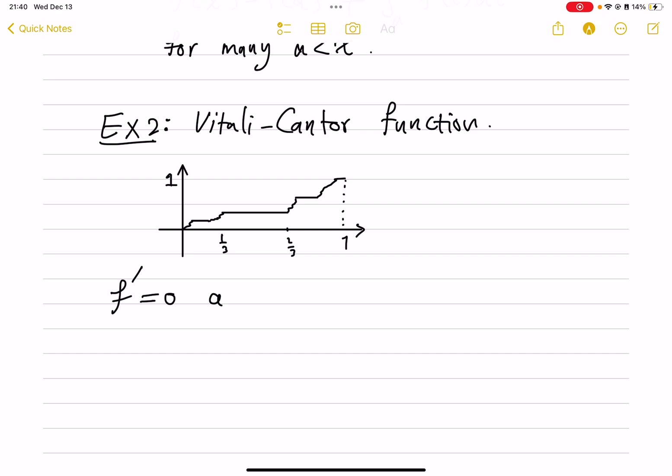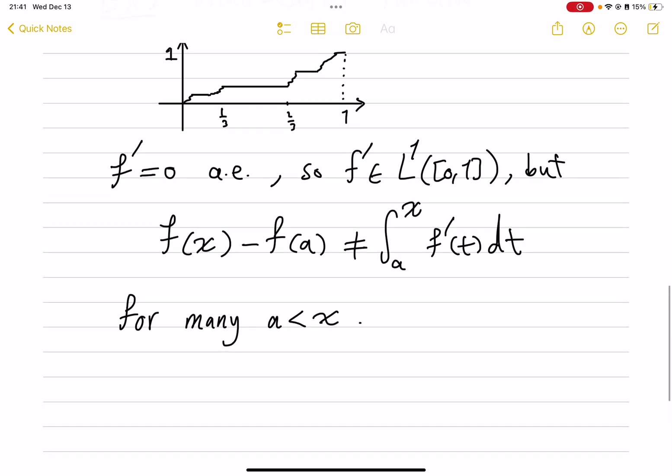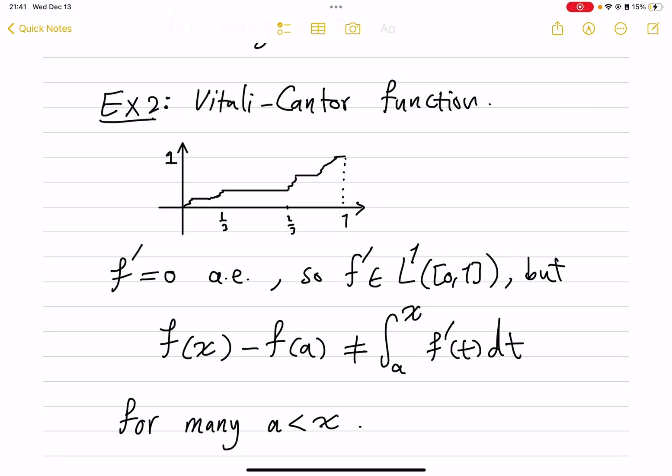However, f prime is zero almost everywhere, which means that f prime is also integrable on [0,1]. But f(x) minus f(a) is not equal to the integral from a to x of f'(t) dt for many a less than x. In particular, unless a and x both belong to the same removed interval, this will fail.